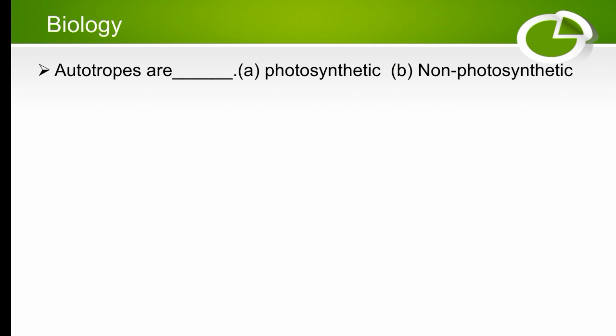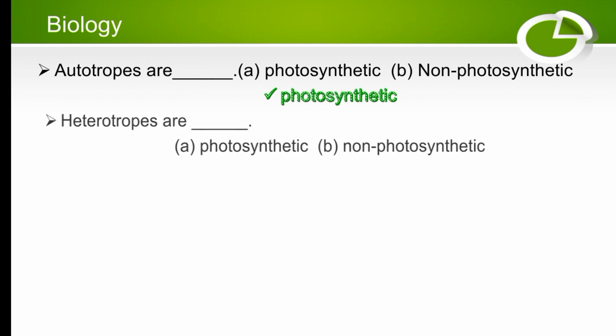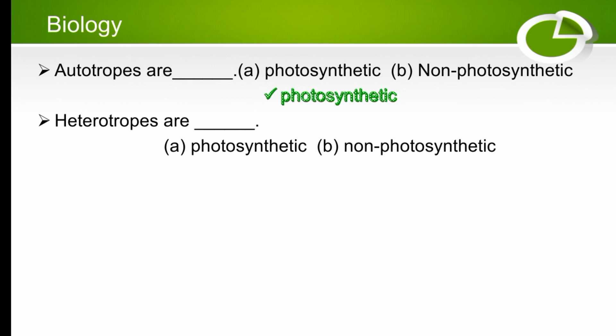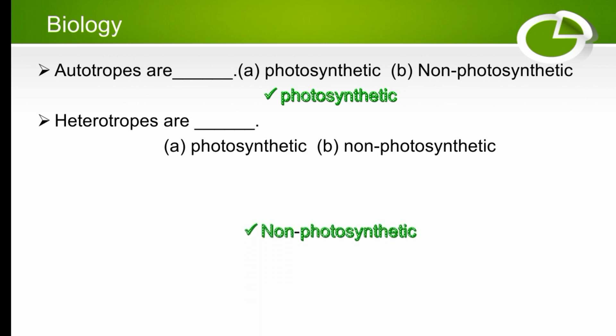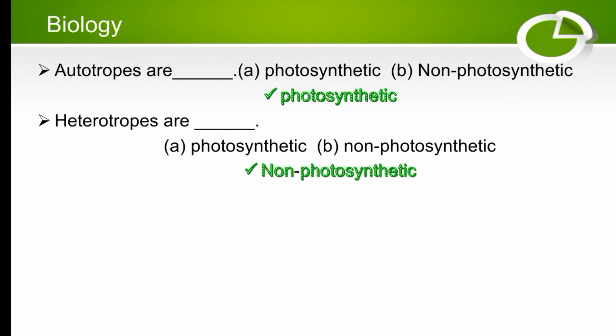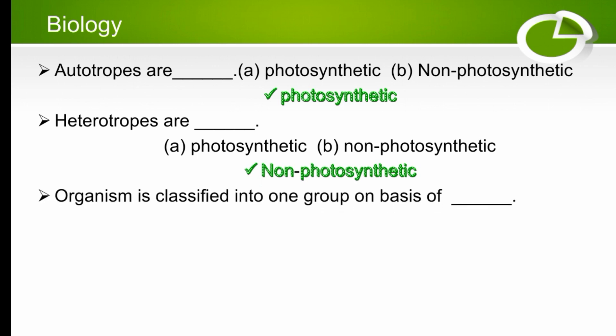Autotrophs are photosynthetic; heterotrophs are non-photosynthetic. The right option is non-photosynthetic — heterotrophs cannot prepare their own food.